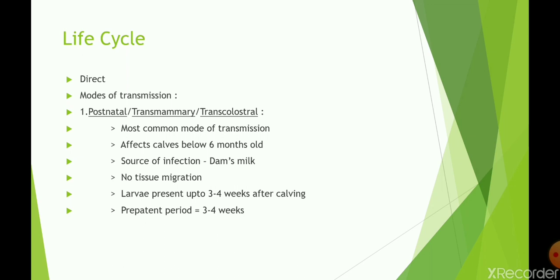Transmammary transmission affects calves below 6 months of age. The source of infection is the dam's milk or colostrum. No tissue migration occurs in this route. Larvae are present in milk up to 3 to 4 weeks after calving. The pre-patent period — from entry of the infective stage until eggs appear in feces — is approximately 3 to 4 weeks.